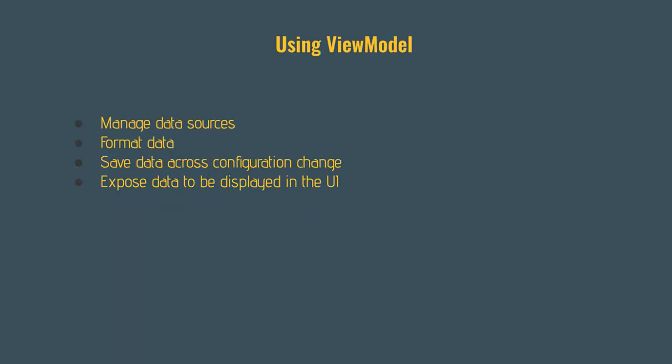With the ViewModel, we can manage our data sources — it might have multiple repositories and pull data in from all of them, combine them together, and format that data. For example, it might take in a date timestamp and turn that into a displayable date, or build up an icon URL based on some code or convention in the API. The ViewModel helps us save data across configuration changes and can expose that data to the UI using something like LiveData, so the UI will only be updated when it's active, while the ViewModel can update itself independently.